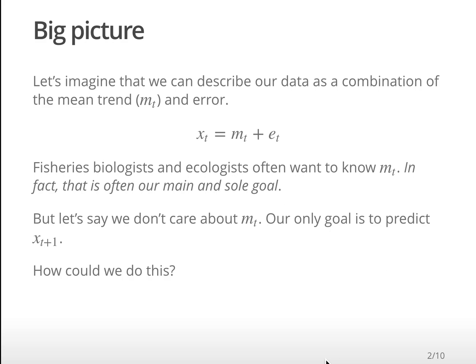Let's start off with the big picture. Imagine we have some data, we're going to call this x_t, it's a time series, and we could describe that data as some mean trend and some error. Let's imagine there's just some points there and we've got that m is a line that's kind of going through the middle of those points.